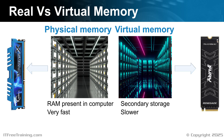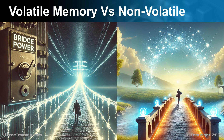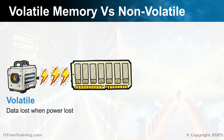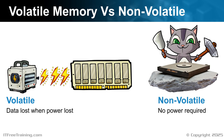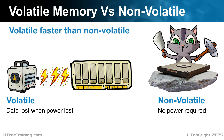Before diving deep into how real and virtual memory works, let's first look at some terms and basics of how memory works. When working with computers, you will hear the terms volatile memory and non-volatile memory. Volatile memory requires power in order to keep its data — if power is lost, the data is lost. Non-volatile memory is storage that does not require power to keep its data. Volatile is faster than non-volatile, so when the computer is using data, you always want to use volatile as much as possible to make your computer run as fast as possible.